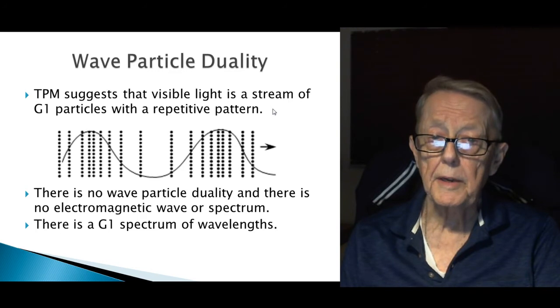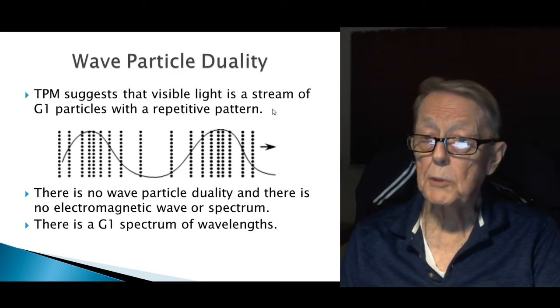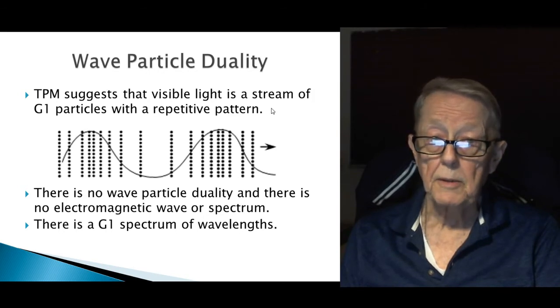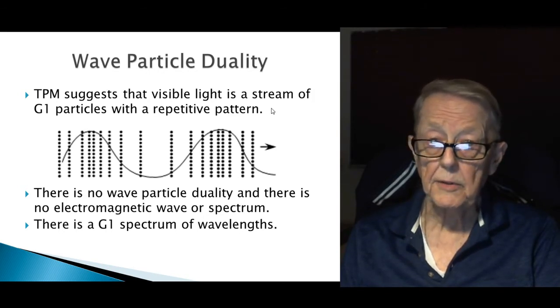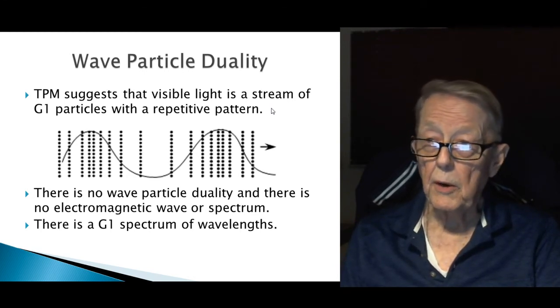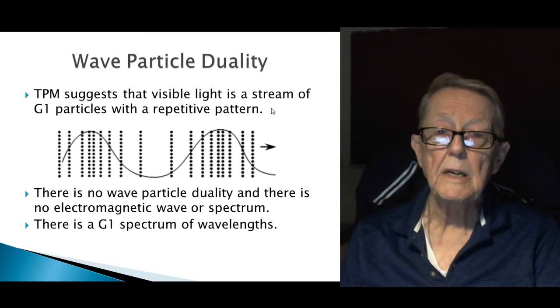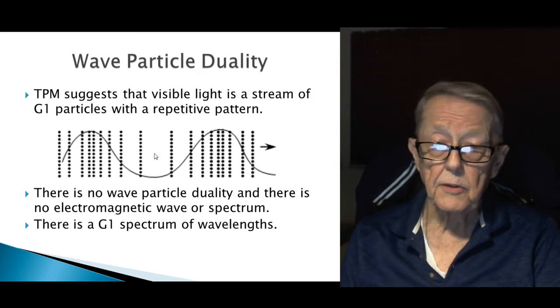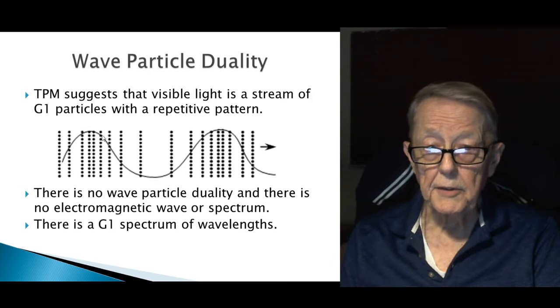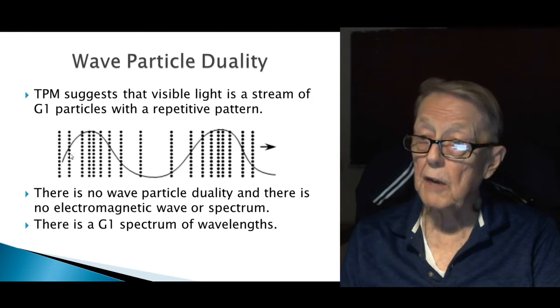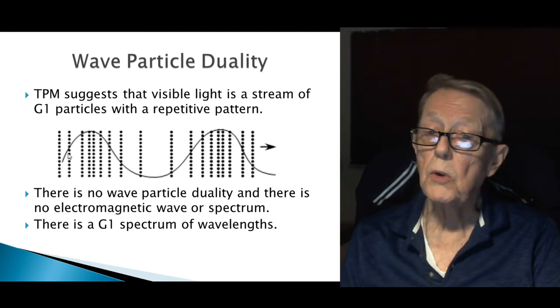Wave-particle duality. The TPM suggests that visible light is a stream of G1 particles with a repetitive pattern. There is no ether or anything to support a wave-type motion, stream of particles. Each dot is a particle moving to the right, and the distribution shows peaks and valleys, and that can give you the sense of a wave, but it's only particles.